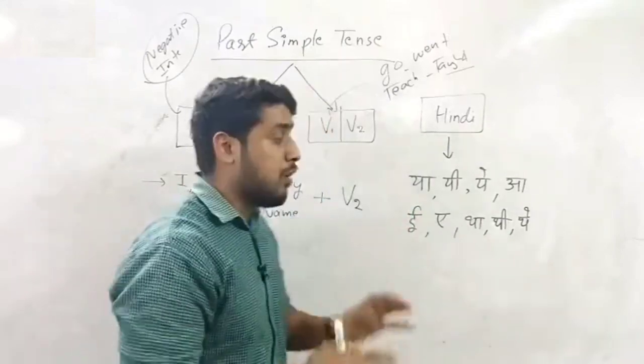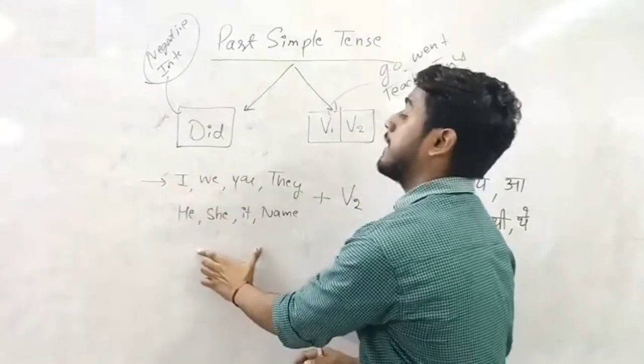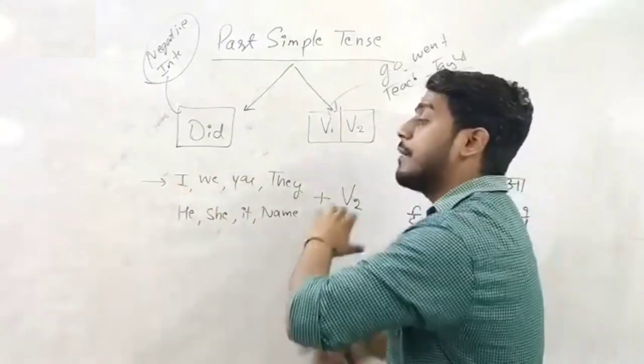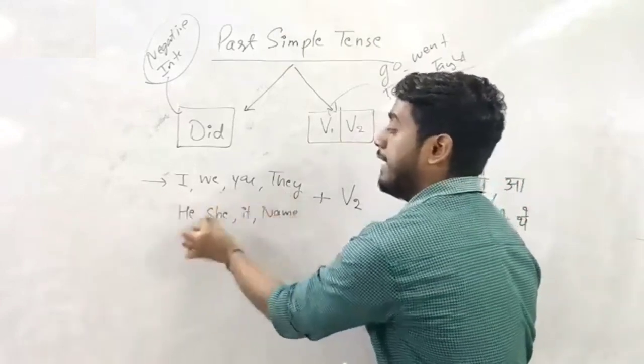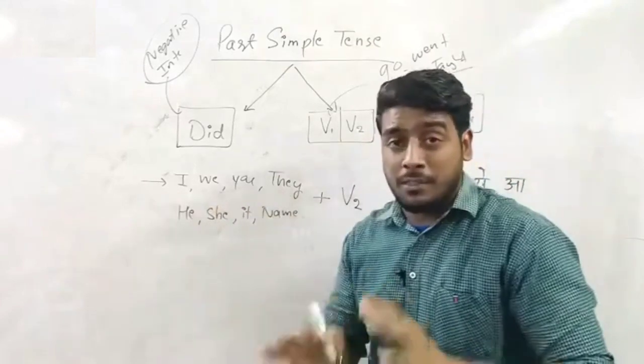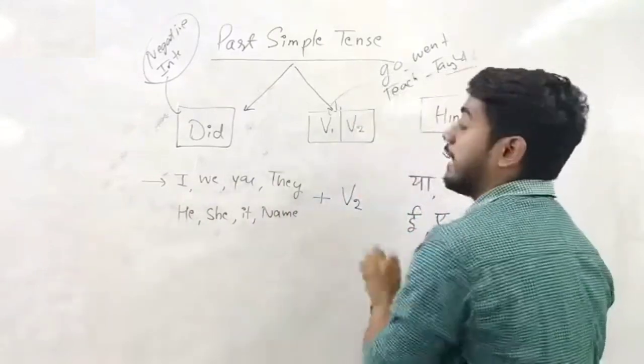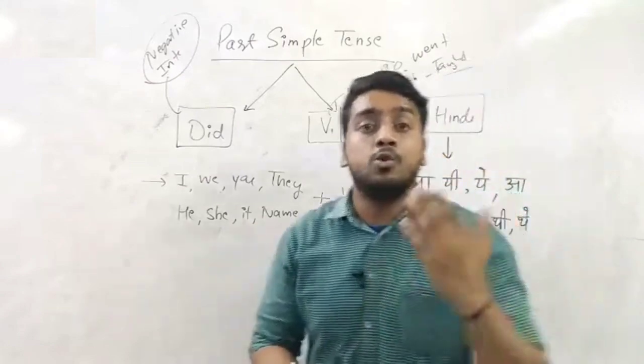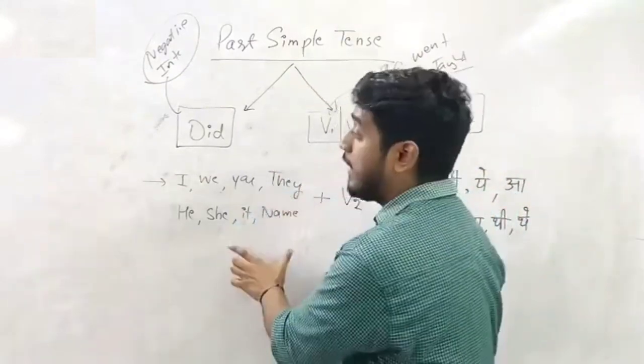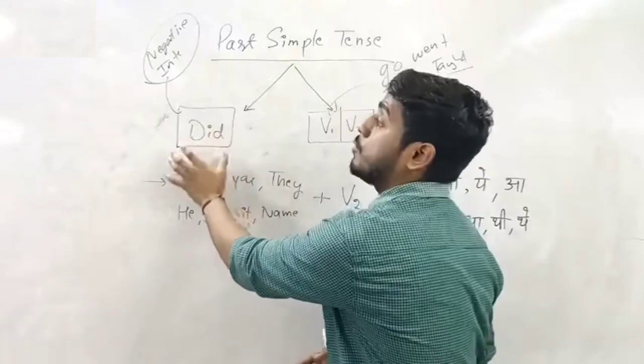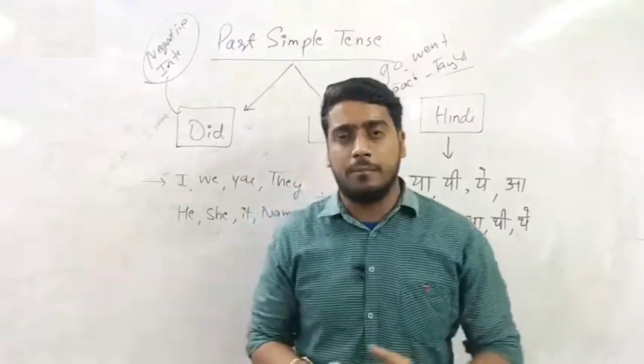If we want to make a simple sentence, we have to learn one formula. That is, we have to add V2 with all subjects, which means with any subject which can be I, we, you, they, he, she, it, or any third person singular subject. It can be anybody's name. After that we have to add V2 to just make simple sentences, because in simple sentences, as I told you, we do not use did. We will use it only in negative or interrogative sentences.